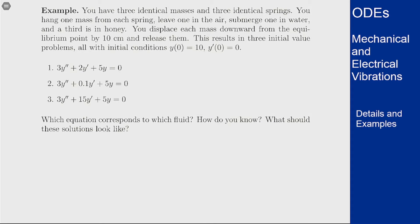So we have three masses and three springs, all of which are identical. We hang one of the masses from each of the springs. We put one spring in the air and leave it to do its thing, we submerge one in water and let it do its thing, and we put the other one inside honey and let it do its thing.